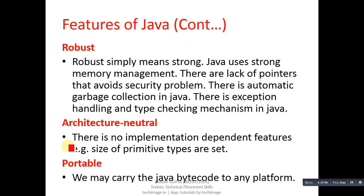Architecture neutral means there are no implementation-dependent features — for example, the size of primitive types are fixed. So Java is architecture-neutral because it is not dependent on the implementation environment. Portable means we may carry the Java bytecode to any platform. Java bytecode is portable — we can move bytecode from one machine to another.